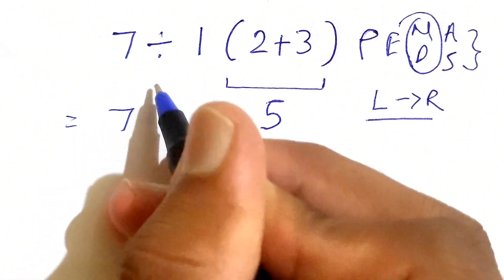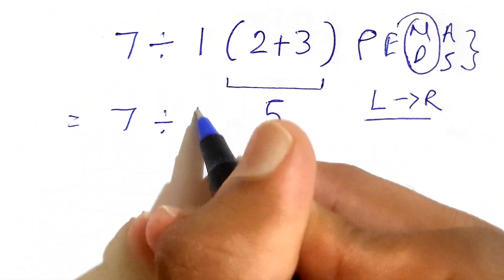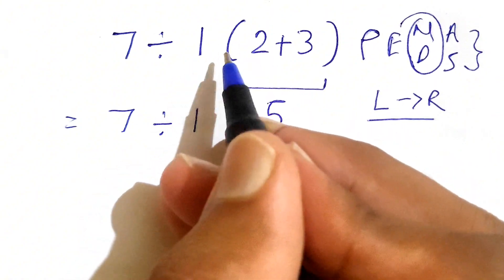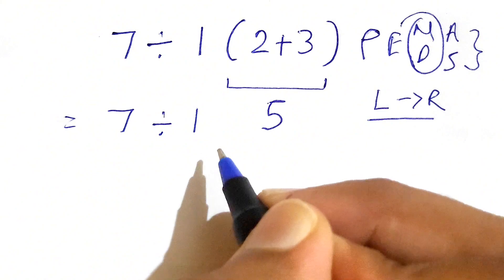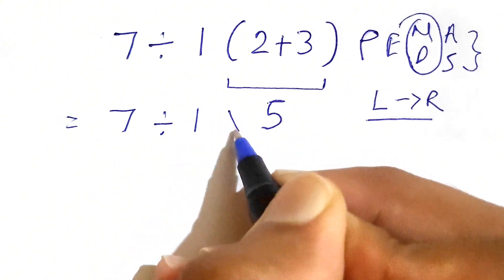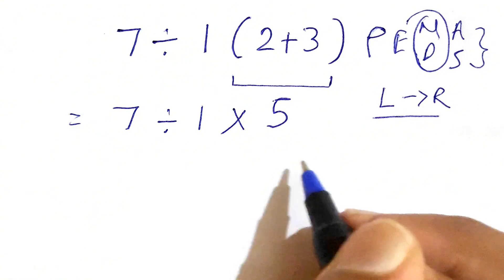We have 7 divided by 1, and there is multiplication because it's near the parentheses. So we consider this as multiplication. Therefore, 1 times 5. So we have this expression.